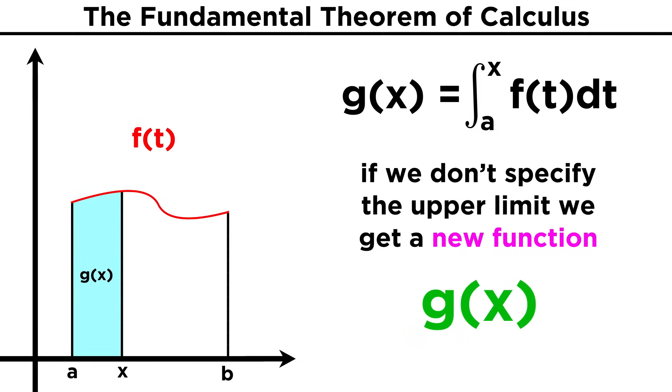If we leave x as a variable, then we instead just get the function g of x. We can think of g of x as the area under some section of the curve, depending on x, or the area so far, as x moves along the curve.